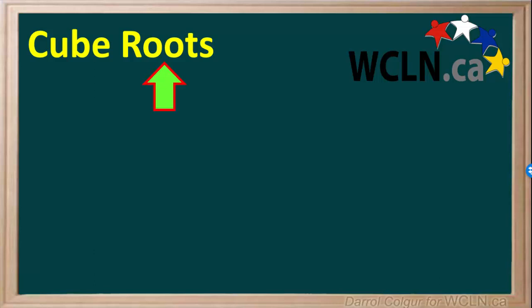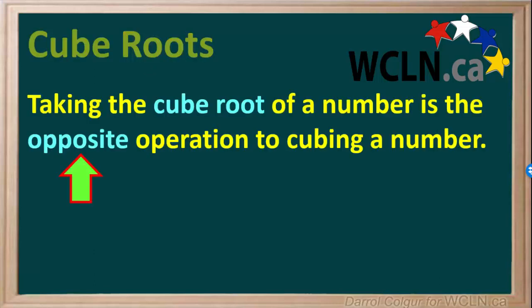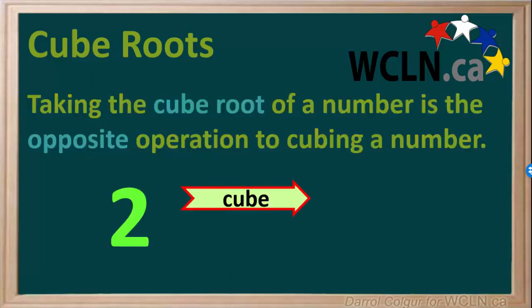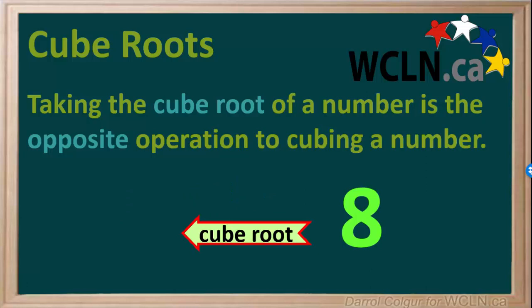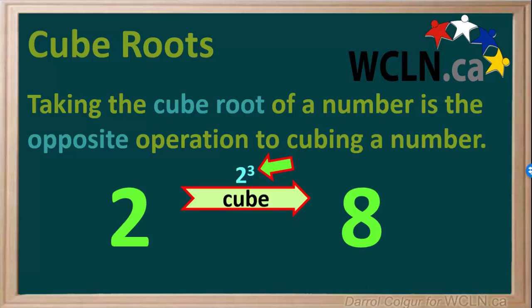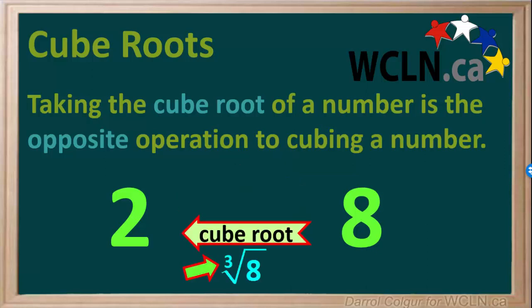Now we'll look at something called cube roots. Taking the cube root of a number is just the opposite operation to cubing a number. For example, cubing 2 means multiplying 2 by itself 3 times, or 2 times 2 times 2, which gives us 8. Whereas taking the cube root of 8 is finding a number which, multiplied by itself 3 times, is equal to 8 — and that number is 2. To show a number is cubed, we give it an exponent of 3. Cube root is shown with the number in a radical and a little 3.